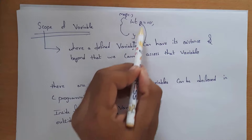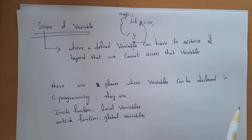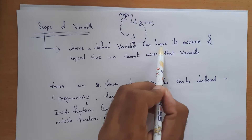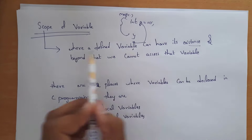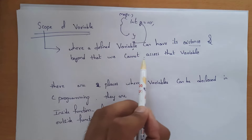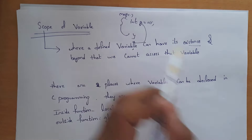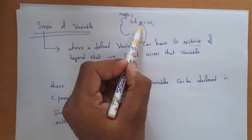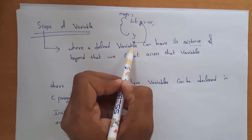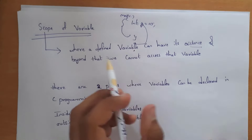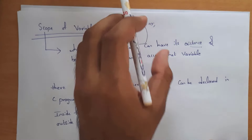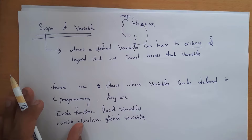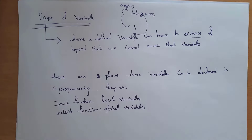I cannot access this variable a outside the main function, because its existence is present only inside the main function. This is the meaning of scope of a variable in C programming.